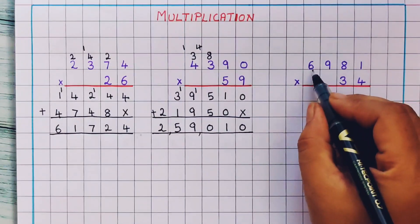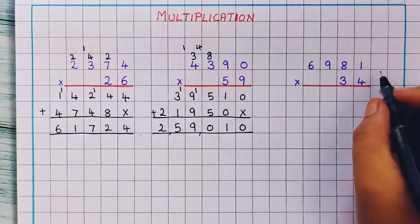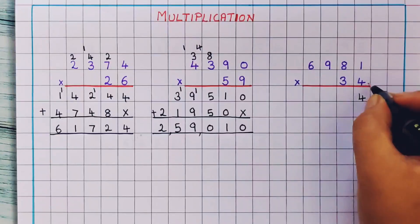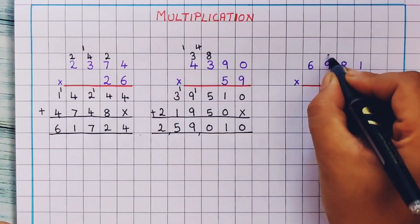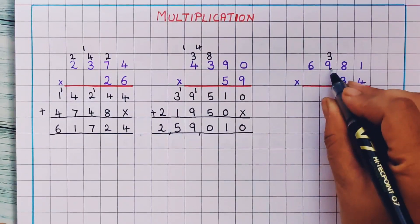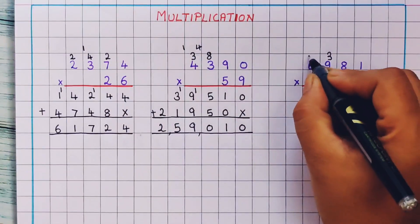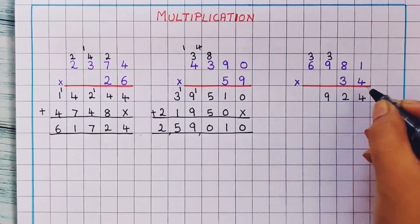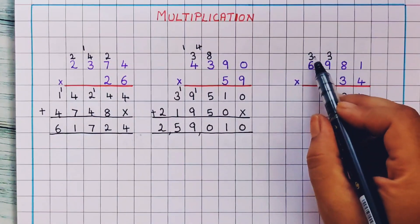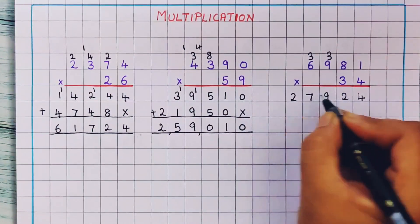Now let's see the next one: 6,981 into 34. So we will start the multiplication with 4. 4 1's are 4. 4 8's are 32, so 3 and 2. Now 4 9's are 36. 36 plus 3 is 39 — 3 and 9. Now 4 6's are 24, plus 3 is 27. So I will write here 2, 7 — 27.